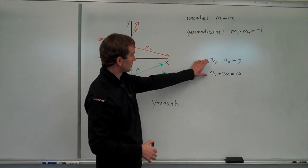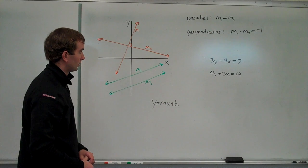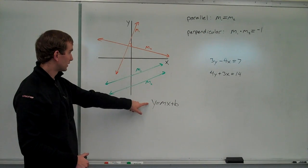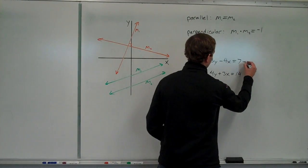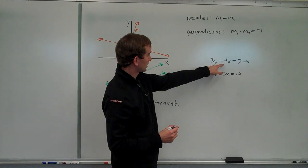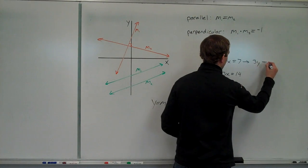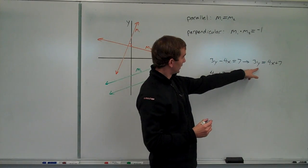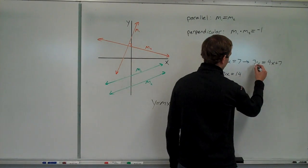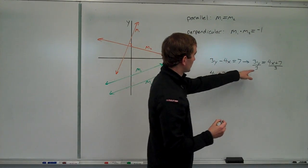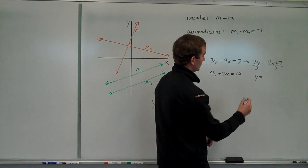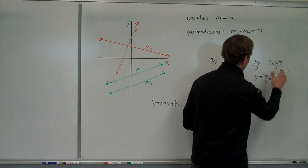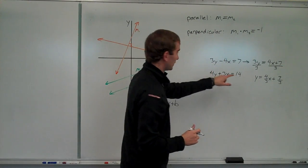Now in this case these lines aren't in slope-intercept form, so we need to convert them. Taking the first equation, I'm going to add 4x to both sides, so it becomes 3y equals 4x plus 7. We still don't have y alone, so we divide both sides by 3 — and we have to be careful because that whole side gets divided by 3. This now becomes y equals 4-thirds x plus 7 over 3. That's the equation of this line in slope-intercept form.